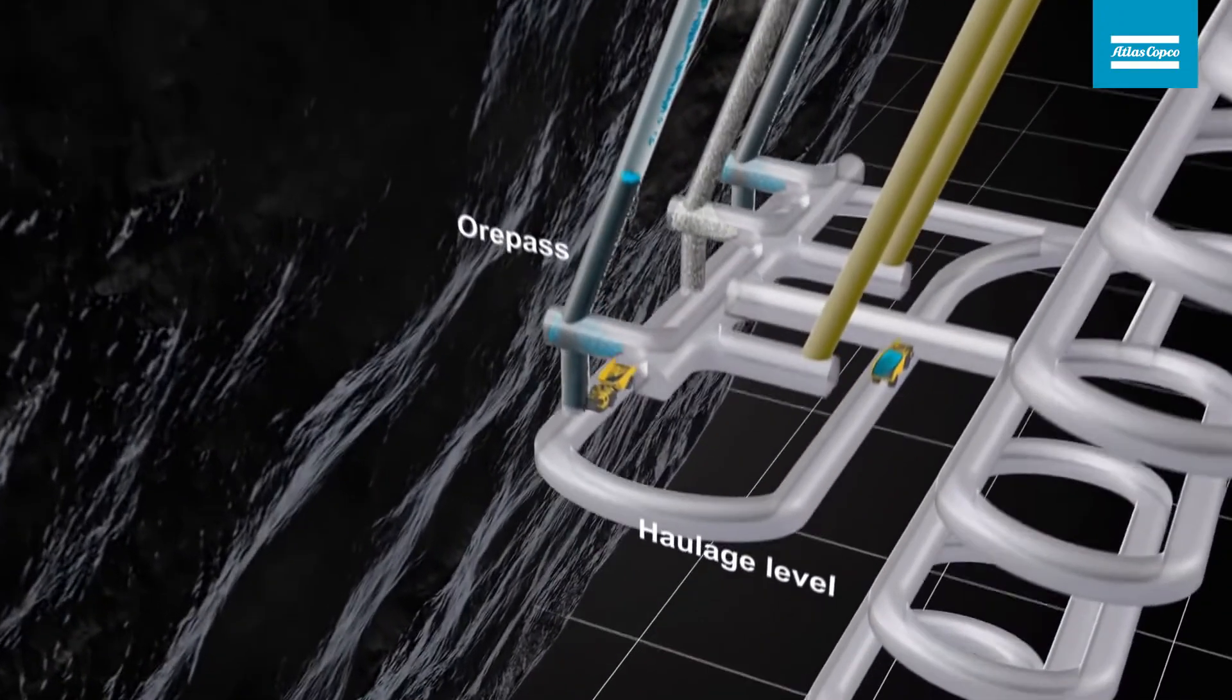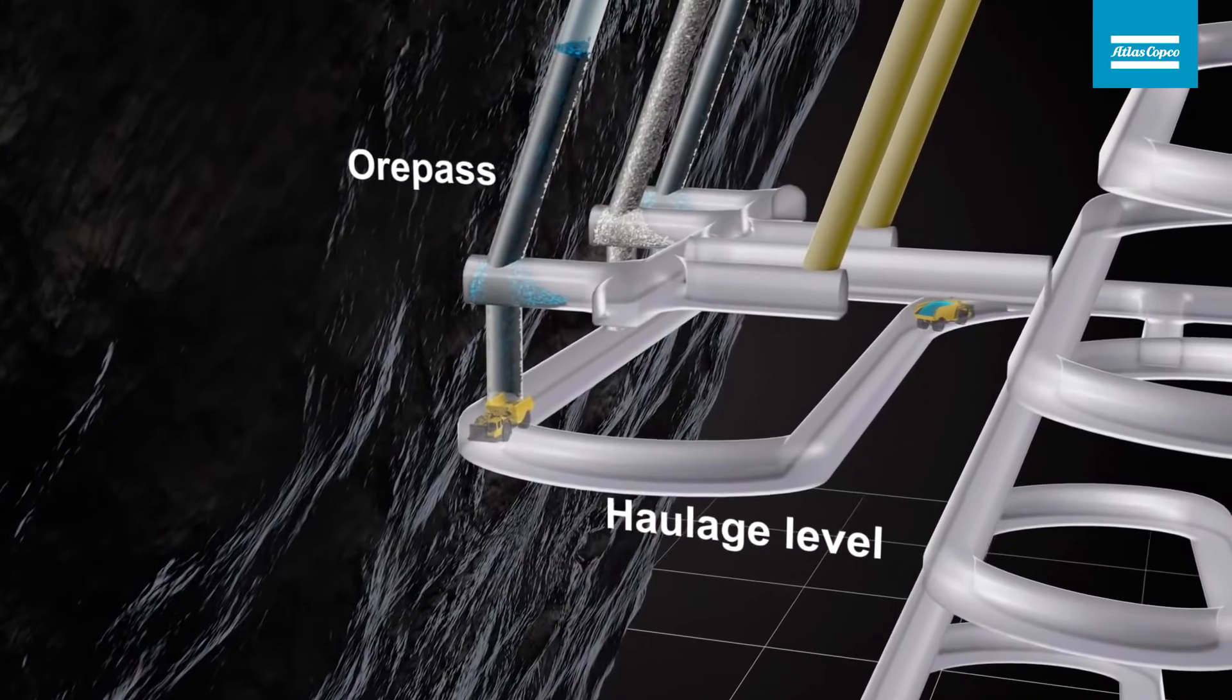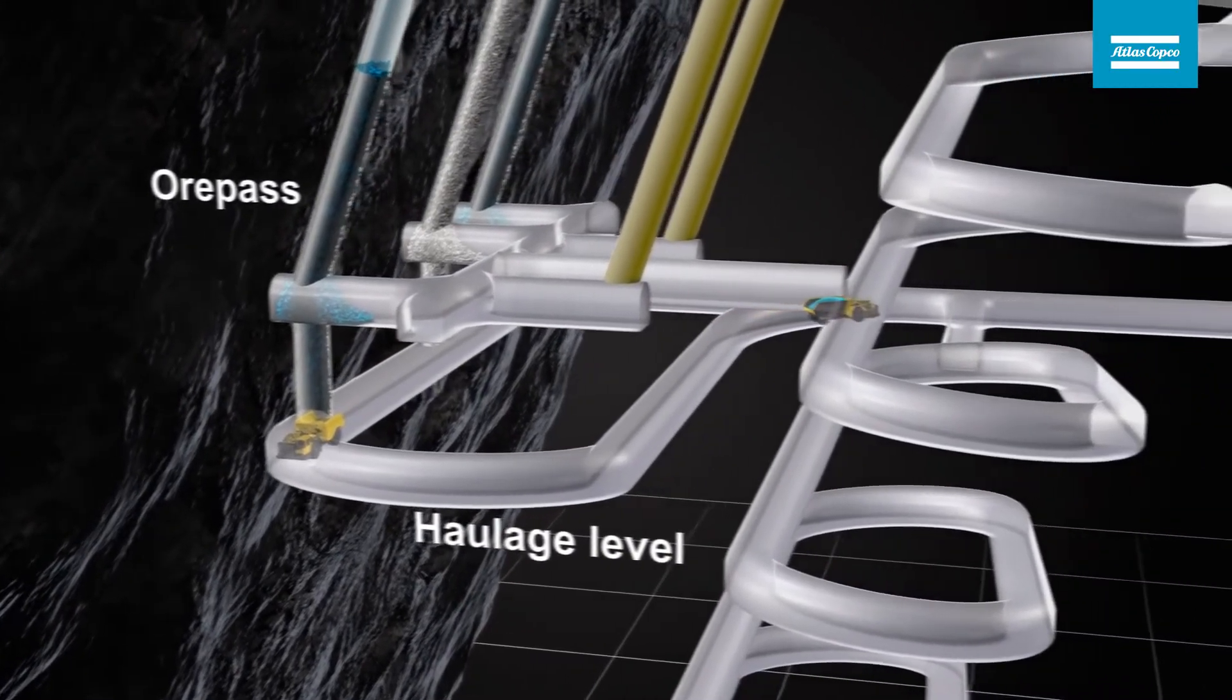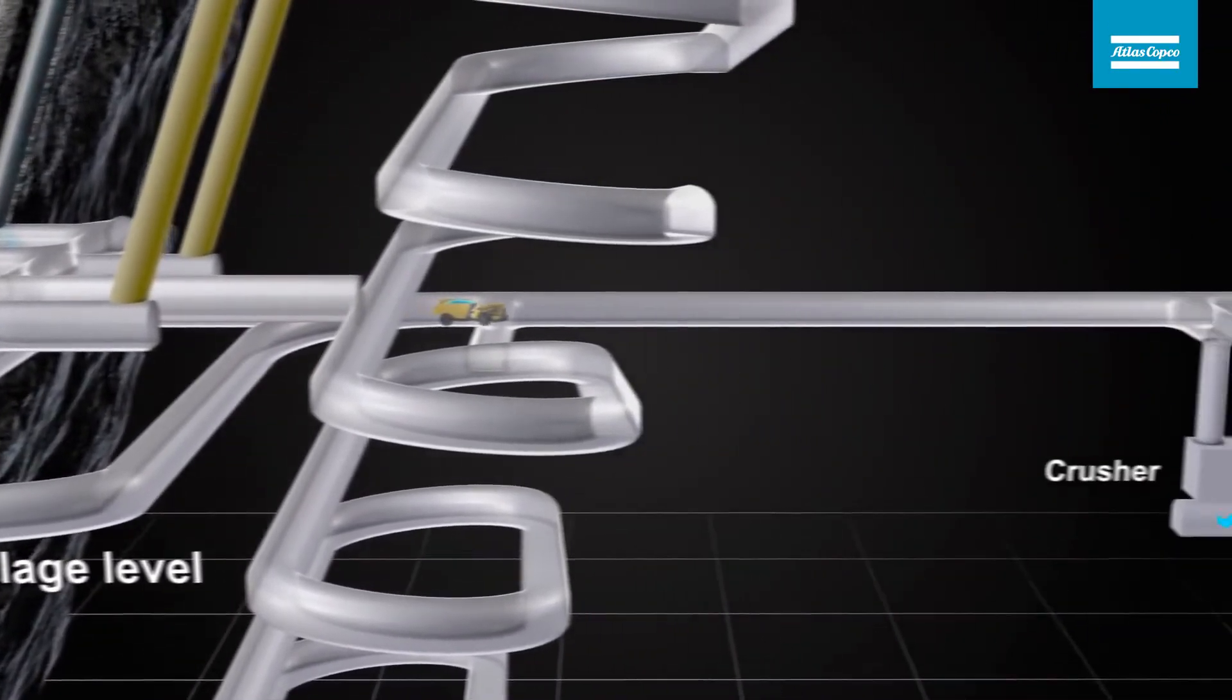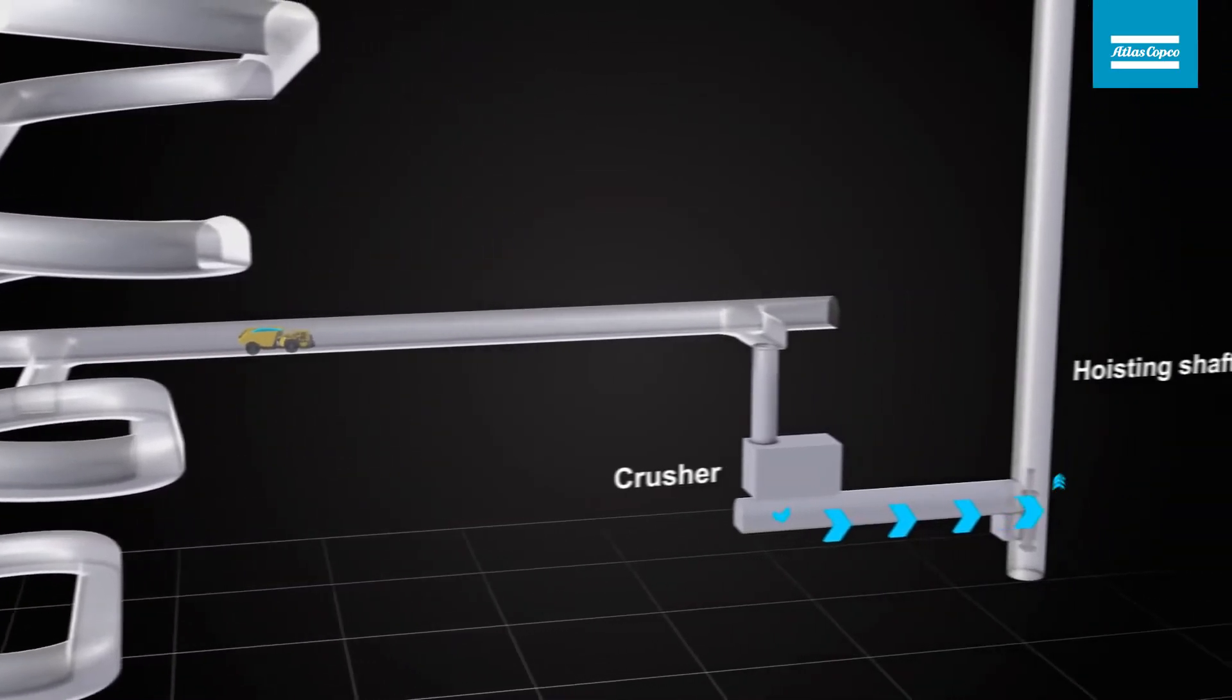Dumping the ore into ore passes connected to the haulage level is an efficient way of transporting rock from the production points to the crusher.